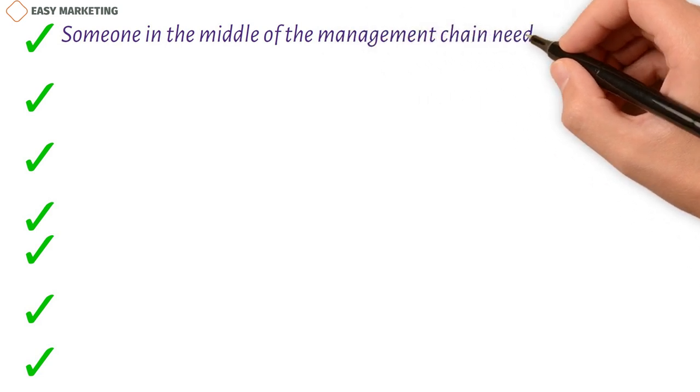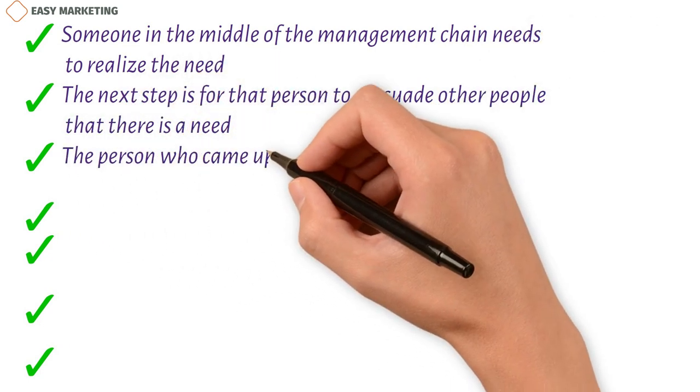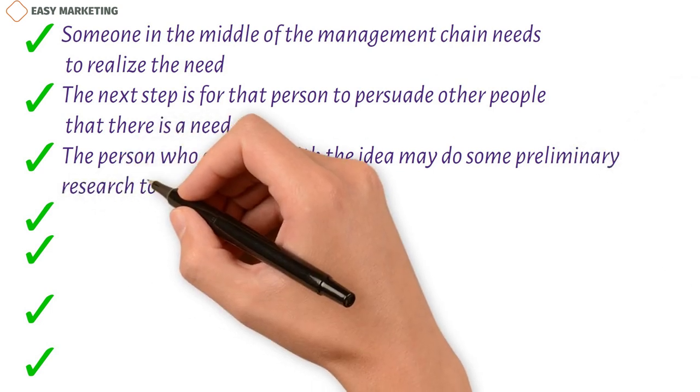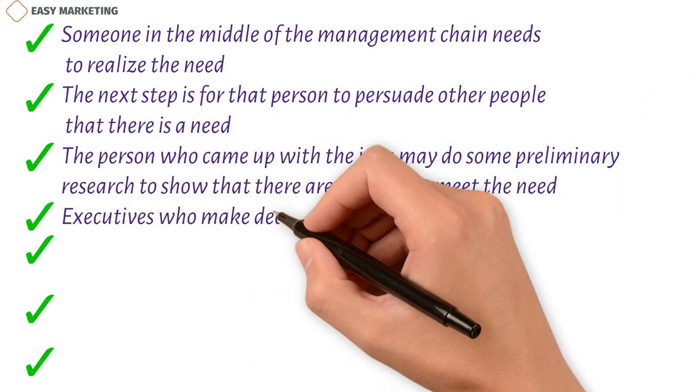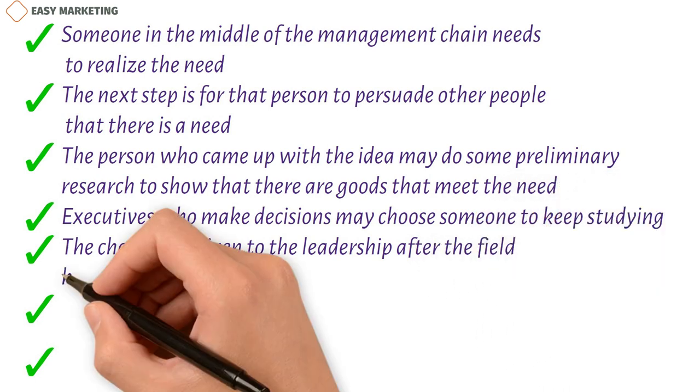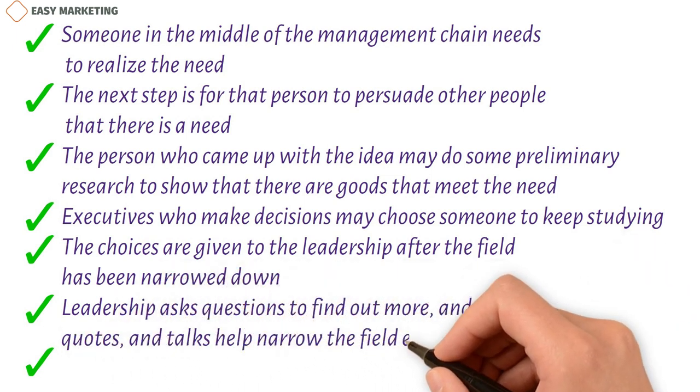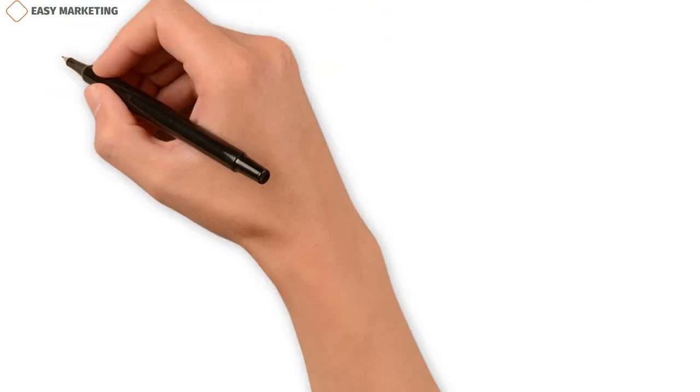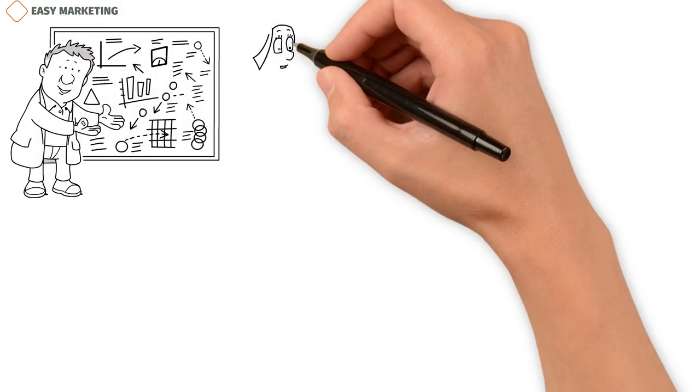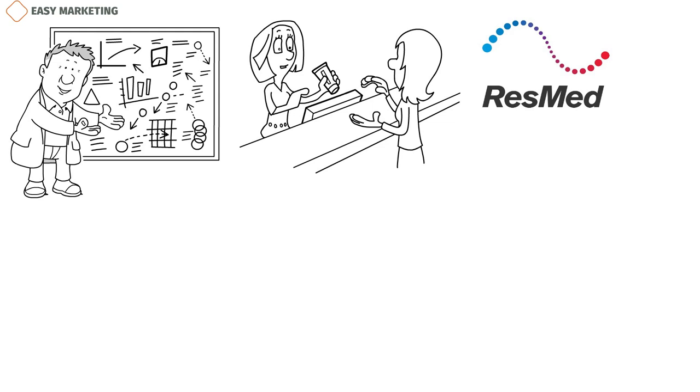When medium and big businesses decide what to buy, someone in the middle of the management chain needs to realize the need. The next step is for that person to persuade other people that there is a need. The person who came up with the idea may do some preliminary research to show that there are goods that meet the need. Executives who make decisions may choose someone or a group of people to keep studying. The choices are given to the leadership after the field has been narrowed down. Leadership asks questions to find out more and demos, quotes, and talks help narrow the field even more. At last, a choice is made.